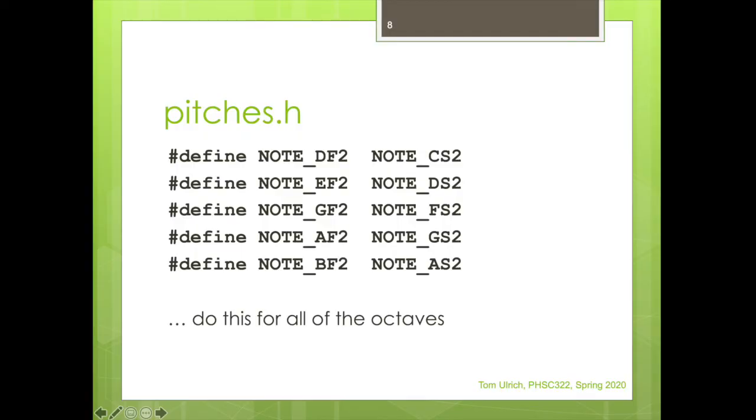So in pitches.h, what you could do or in your file, you would just add them. So for the second octave, you would add D flat, which is defined as C sharp. You'd add E flat, which is D sharp. You'd have GF2, which is the same as FS2. G flat is the same as F sharp. You'd have A flat 2, which is the same as G sharp 2. And you'd have B flat 2, which is the same as A sharp 2. And you'd do this for all the octaves. I think the pitches.h goes from octave 2 to octave 8.